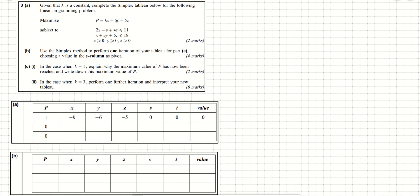In this video we look at a past exam question which requires us to use the simplex algorithm to solve a linear programming problem. The problem is: maximize p equals kx plus 6y plus 5z, subject to 2x plus y plus 4z is less than or equal to 11, x plus 3y plus 6z is less than or equal to 18, and x, y, z are all greater than or equal to 0.